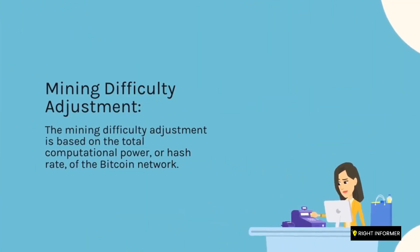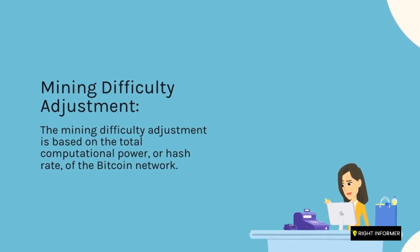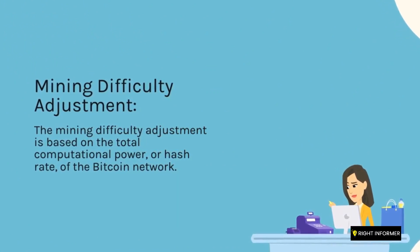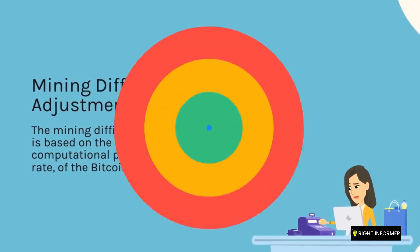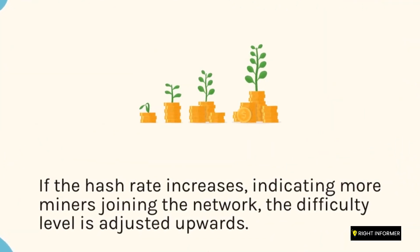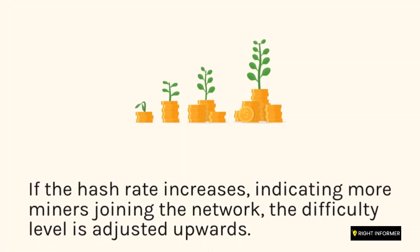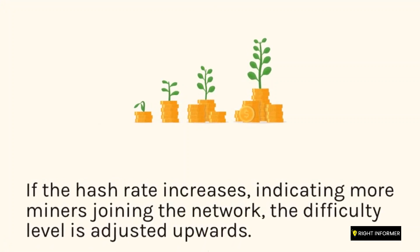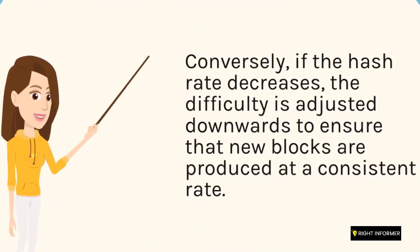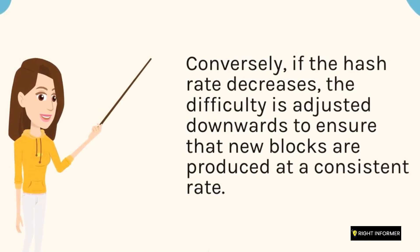Mining difficulty adjustment: The mining difficulty adjustment is based on the total computational power, or hash rate, of the Bitcoin network. If the hash rate increases, indicating more miners joining the network, the difficulty level is adjusted upwards. Conversely, if the hash rate decreases, the difficulty is adjusted downwards to ensure that new blocks are produced at a consistent rate.